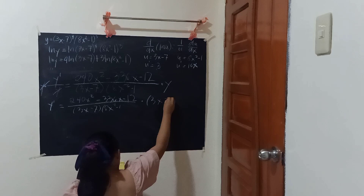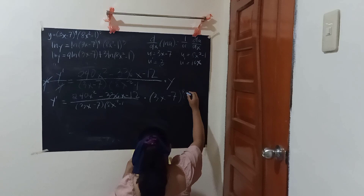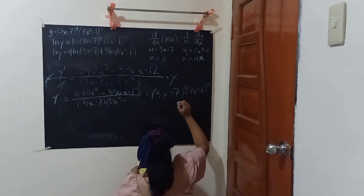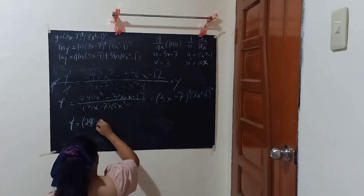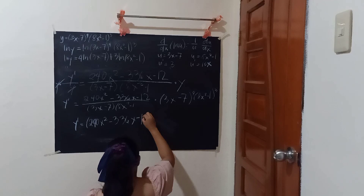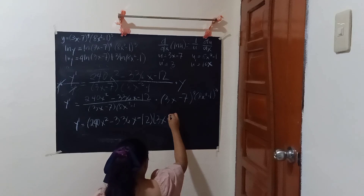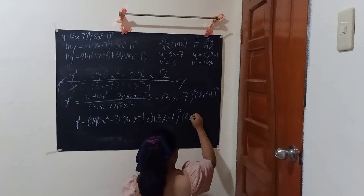Substitute y, which is (3x minus 7) to the 4th power times (8x squared minus 1) to the 3rd power. Therefore, y prime equals (240x squared minus 336x minus 12) times (3x minus 7) to the 3rd power times (8x squared minus 1). So this is the final answer.